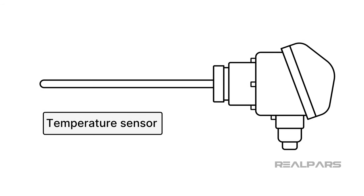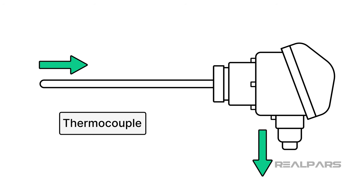Let's kick things off with a brief introduction to the traditional sensor. A sensor is a device that detects changes in physical properties and produces an electrical output in response to that change. An example of a temperature sensor is the thermocouple that produces an increasing voltage across it when exposed to increasing temperatures.